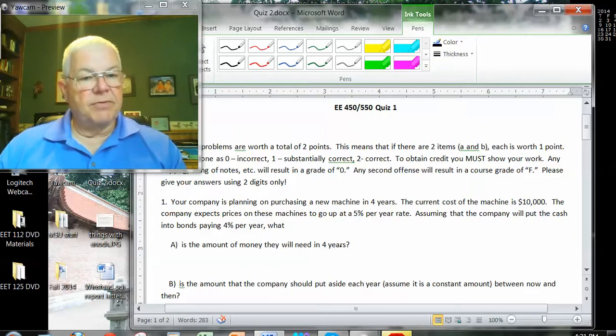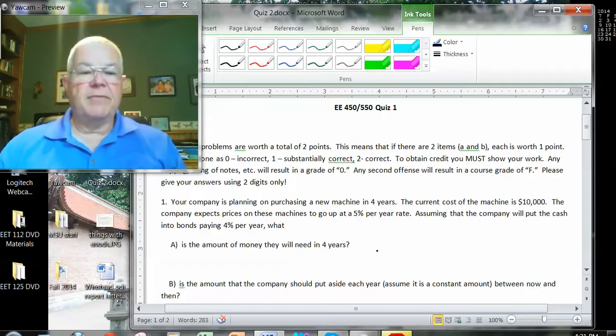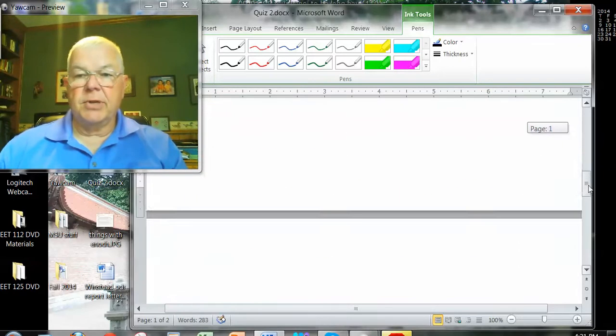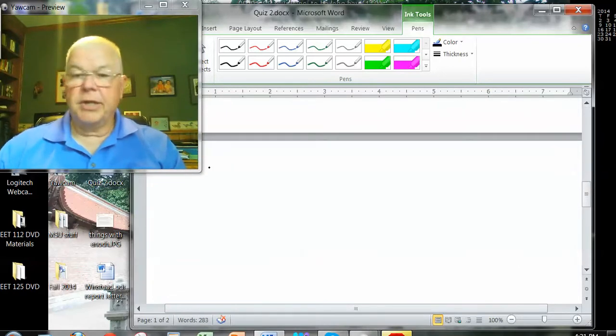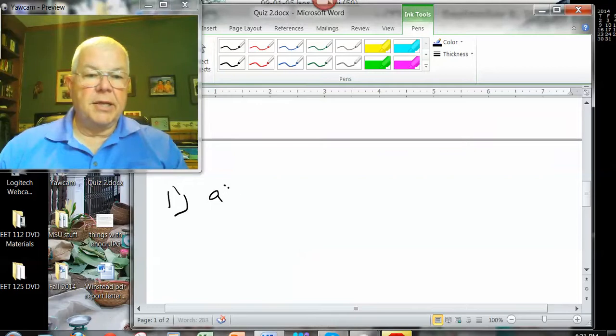How much money will they need in four years? So the first thing we're going to have to do is take the $10,000, which is present value, and we're going to have to project it into the future, four years, so we know how much money we need. Then what we have to do is find out how much money the company needs to put aside each year.